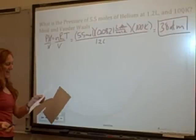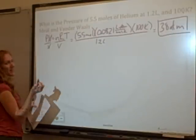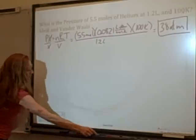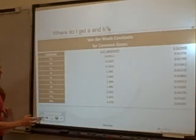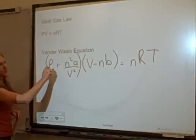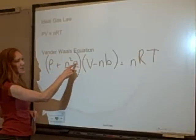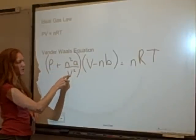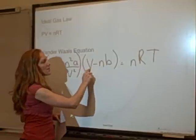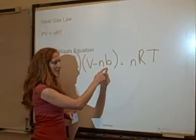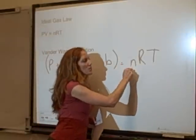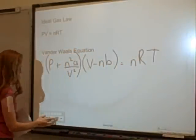Now let's use the van der Waals equation. The equation is: (P + n²a/V²)(V − nb) = nRT. We have pressure, moles squared times the 'a' constant from the chart divided by volume squared, multiplied by the volume minus the number of moles times the 'b' constant from the chart, all equal to nRT.